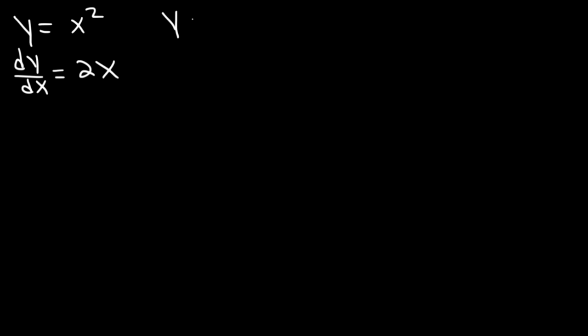Now let's say if we want to estimate y of 1.5. There are different ways we can do that. We can use the tangent line approximation, or we can use Euler's method, which is basically a tangent line approximation but with course correction. And that's what we're going to try to do. We'll work on another example too.